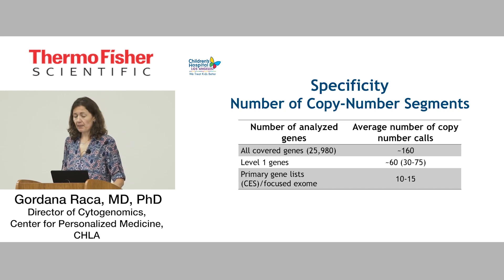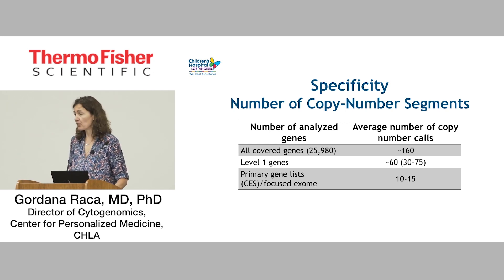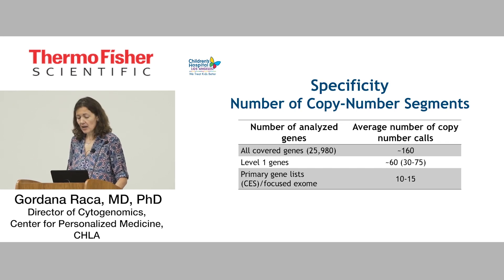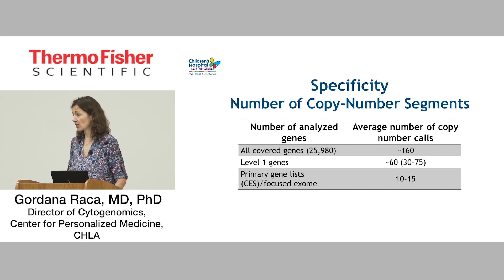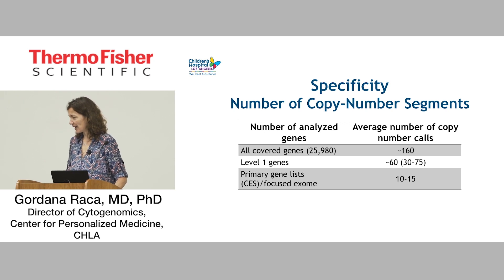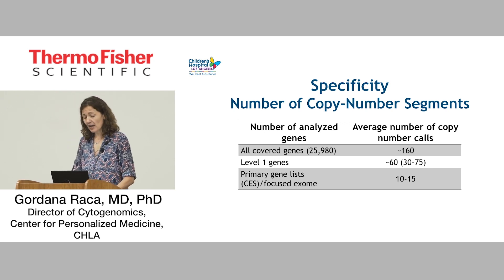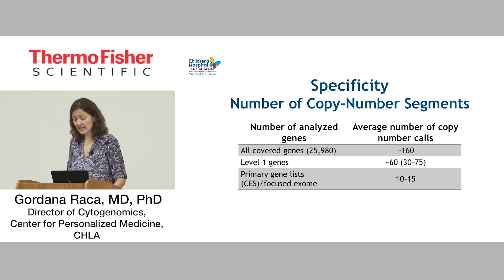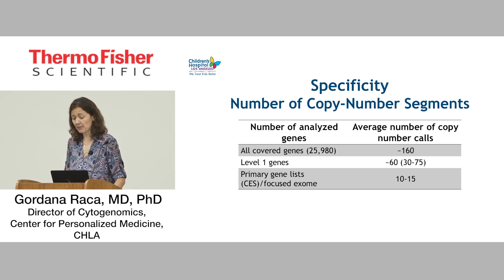We were also concerned about specificity, or false positive calls. Would we be able to interpret or exclude all other calls we might be seeing? Looking at all the covered genes on this array, there were about 160 calls on average in our validation cases. When we compare that with the number of calls from our NGS copy number analysis, this is actually a very modest number. If you only focus on tier 1 genes, that number drops to about 60, and if you further focus on your primary genes based on the patient's phenotype, you have only 10 to 15 calls — a completely manageable number.